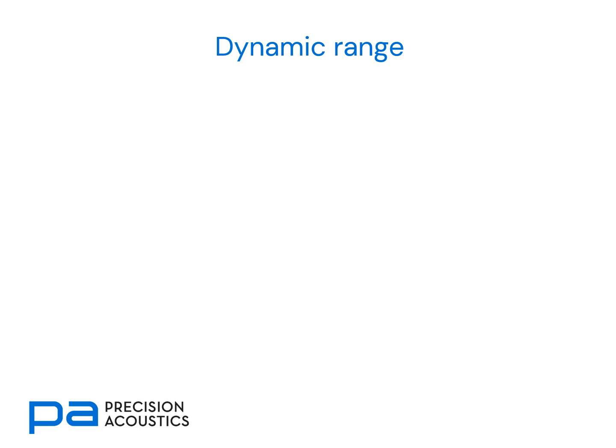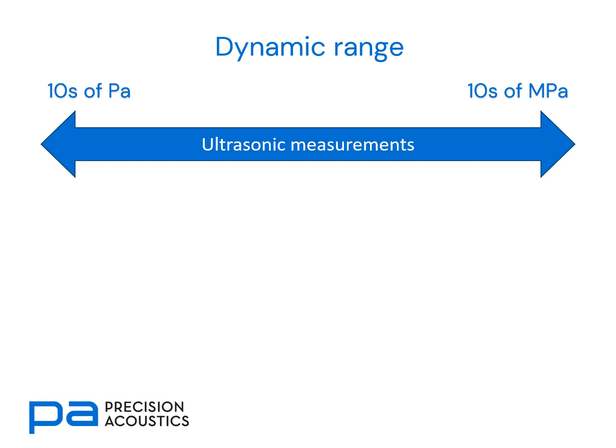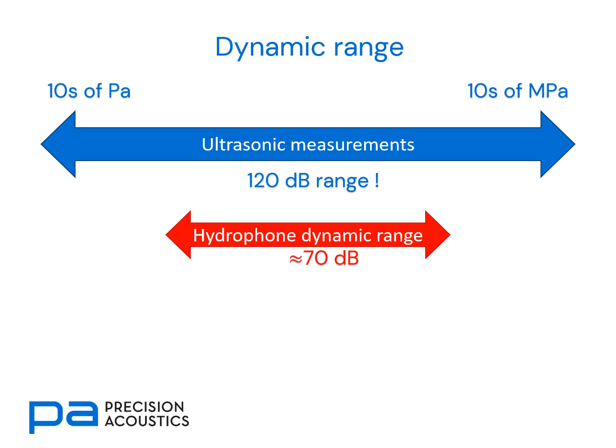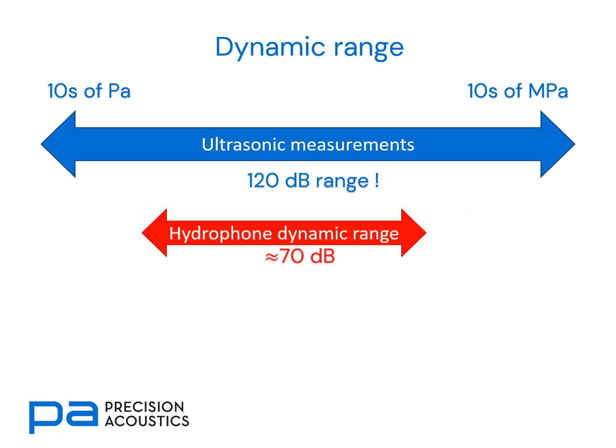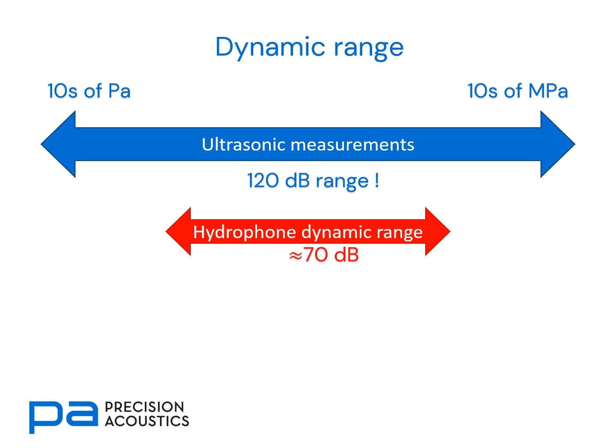The first thing we need to consider is dynamic range. Ultrasonic measurements can often be conducted anywhere between tens of pascals and tens of megapascals, although rarely that entire range within one measurement. This is in excess of 120 dB dynamic range. If we compare this with the typical hydrophone measurement system, which has a dynamic range of approximately 70 dB, we know that we then need to optimise whereabouts our hydrophone's dynamic range sits within the possible measurement range.